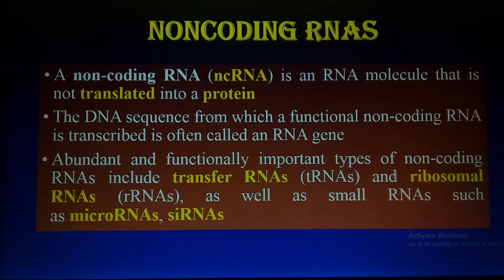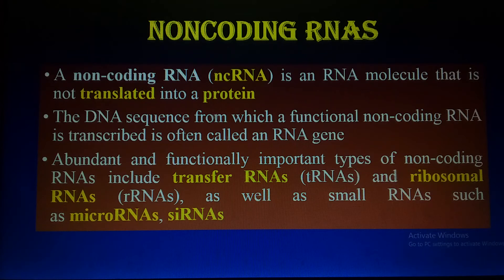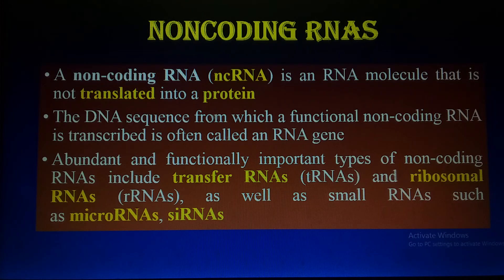To summarize: introns are non-coding sequences that do not encode for protein synthesis, but they play a very important role in producing types of RNAs such as transfer RNA, ribosomal RNA, microRNA, and siRNA. Transfer RNA picks up amino acids during translation; ribosomal RNA plays a very important role in ribosome formation; and microRNA and siRNA perform silencing and many other functions during cell cycles. I will discuss these in detail in the next lecture.